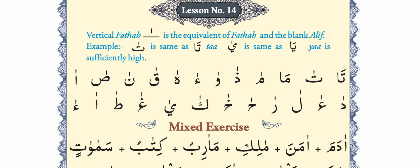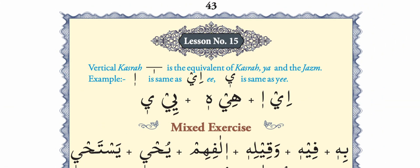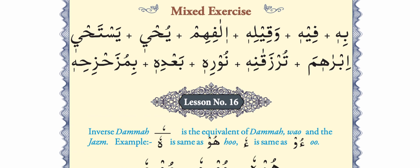The way we have already learned to read the letters, in the same way we read the sound of vertical fatha. When we go to the next lesson about vertical kasra, the way we learned about kasra and ya jazm — that the sound of the letter is prolonged — in the same way, if a letter has vertical kasra the sound will be prolonged. Examples: e, e, he, he, ye, ye.